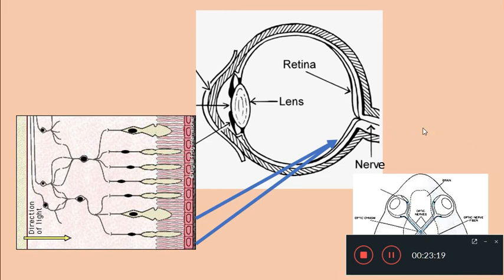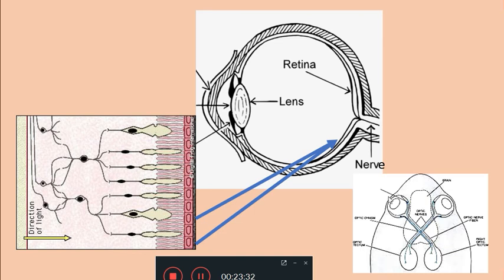The choroid fissure is a fissure that develops on the ventral side of the optic stalk. The optic nerve comes out of the eyeball and goes to the diencephalon. Just in front of the infundibulum at the region of the diencephalon, the nerves from the left and right eyes cross with each other — this region is called as the optic chiasma — and they enter into the optic lobes of the brain.